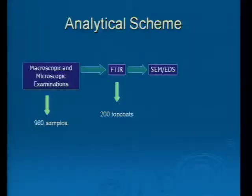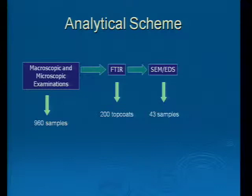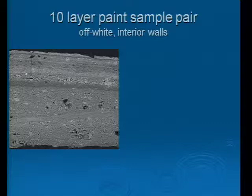Bringing it all back around to our original analytical scheme: 960 samples were originally part of our population. About 200 top coats were analyzed by FTIR — I'm just talking about top coats here to provide some context of the number of samples that had to go forward; I'm not taking into account where we needed to do underlying layers by FTIR. From those 200 samples, 43 had to go forward to SEM at this point.